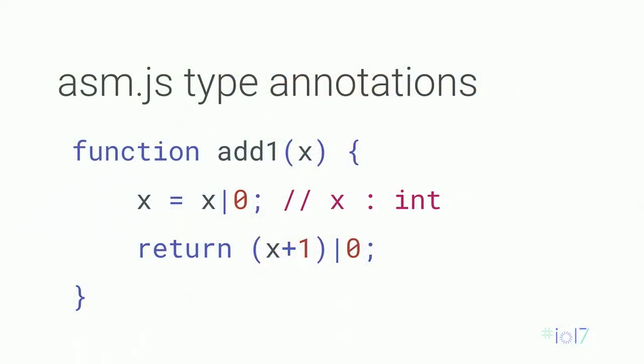Let's see how asm.js and WebAssembly differ. An asm.js output example shows that the first line of a function — 'x equals x or 0' — is a hint telling the JavaScript engine that variable is an integer. That helps the just-in-time compiler generate machine code for an integer because it's explicitly annotated.